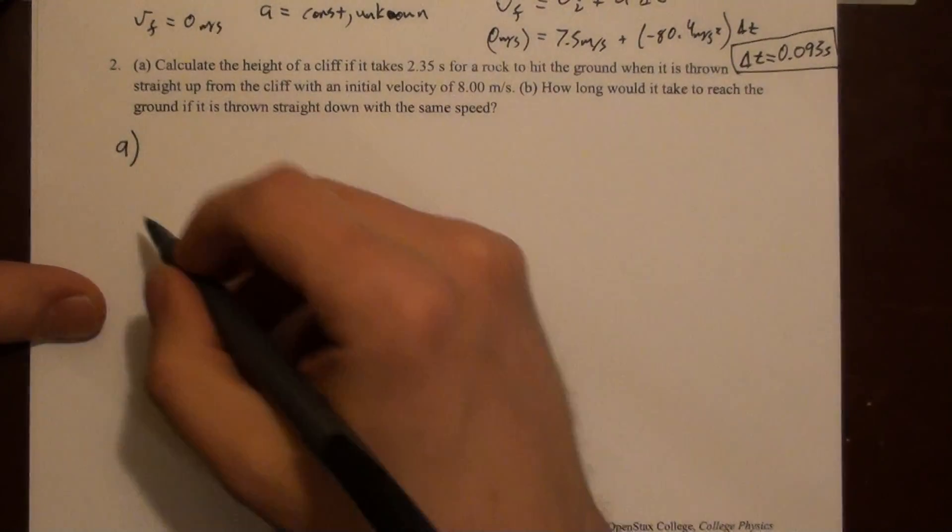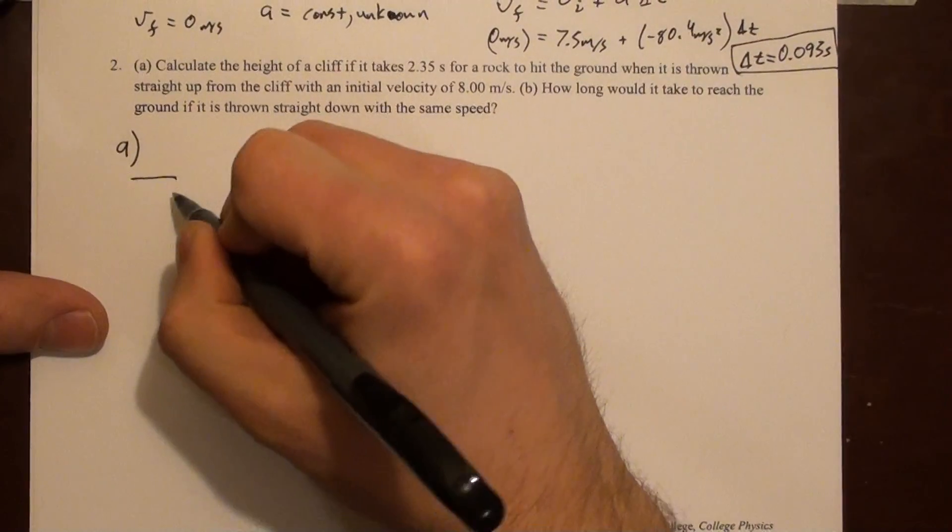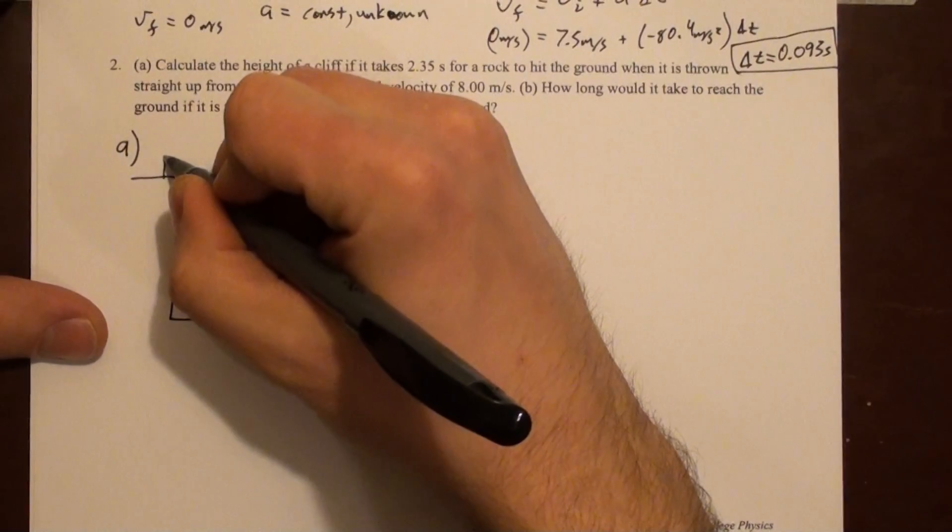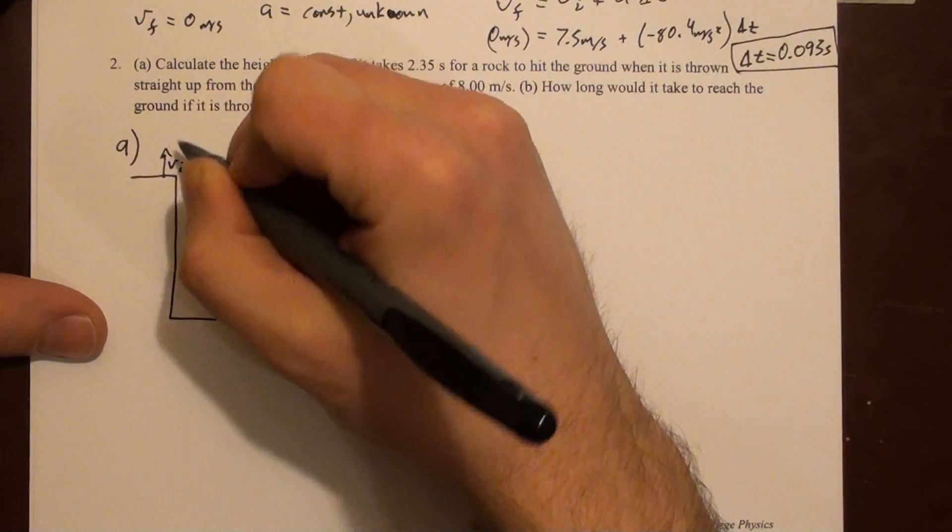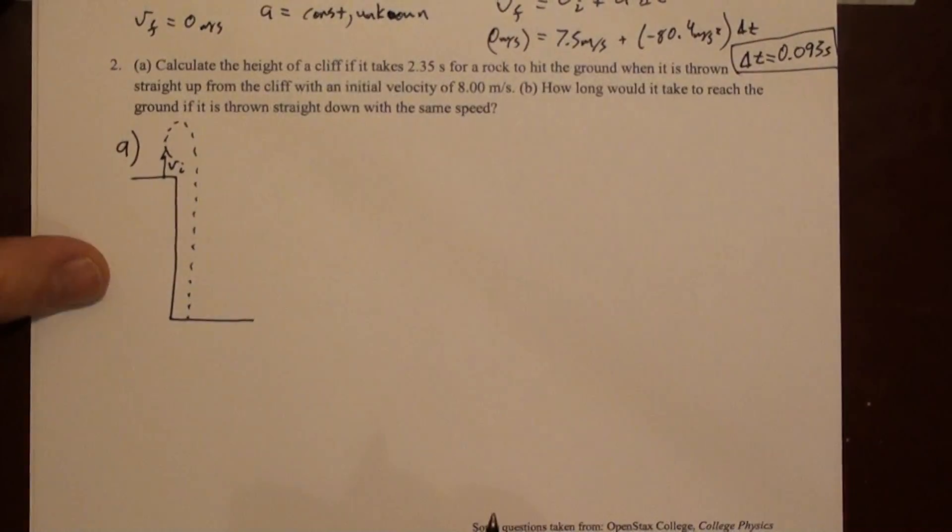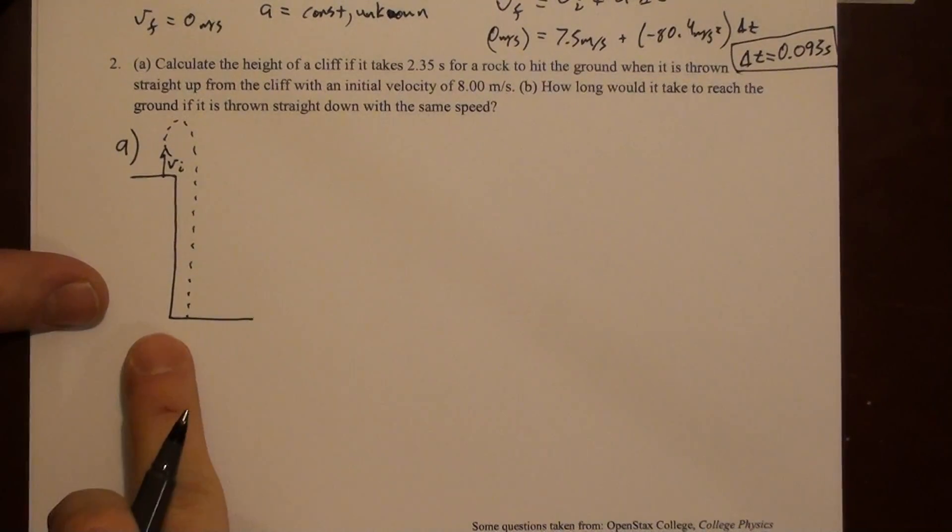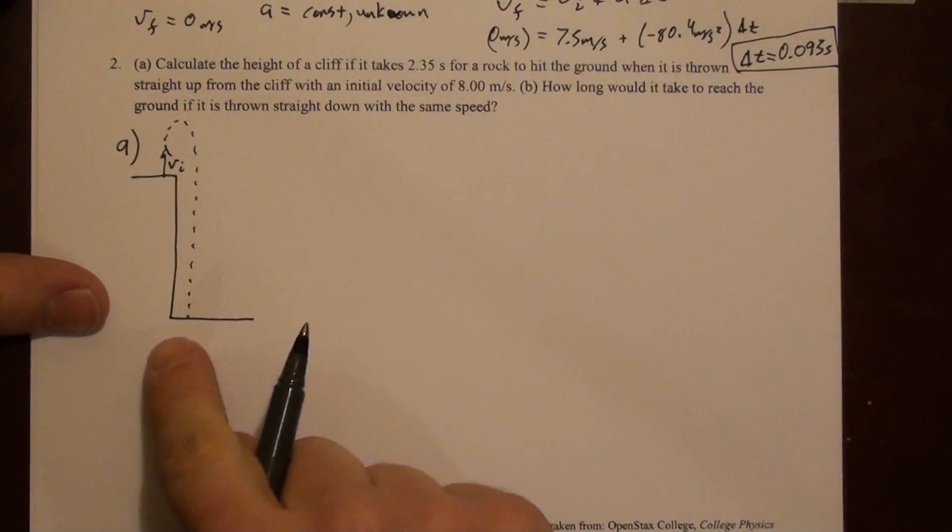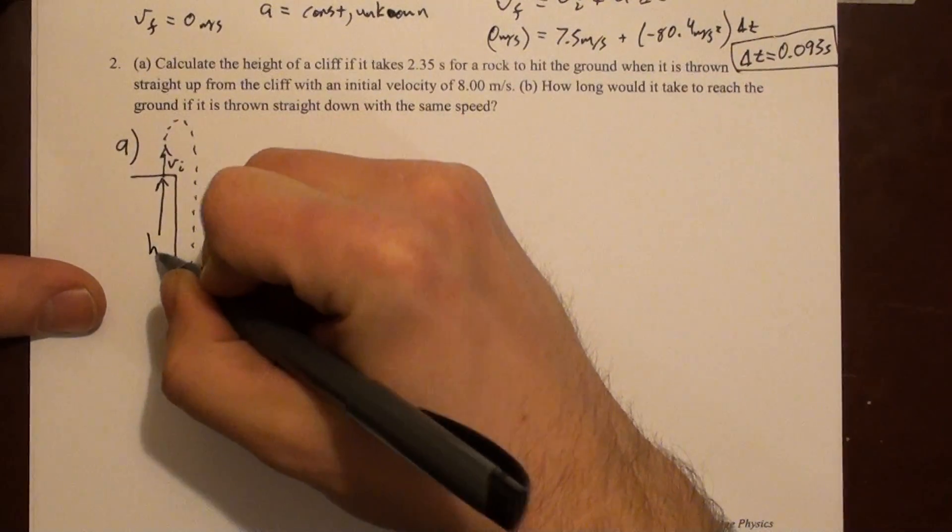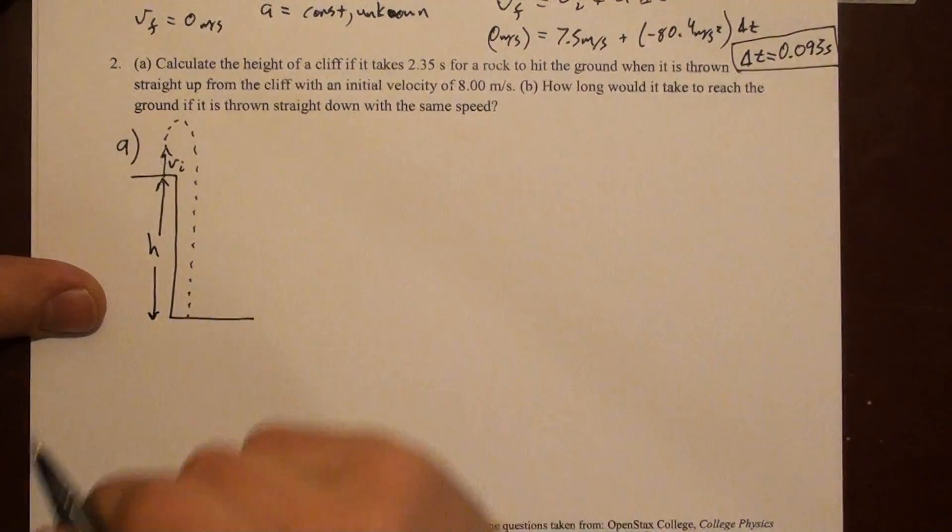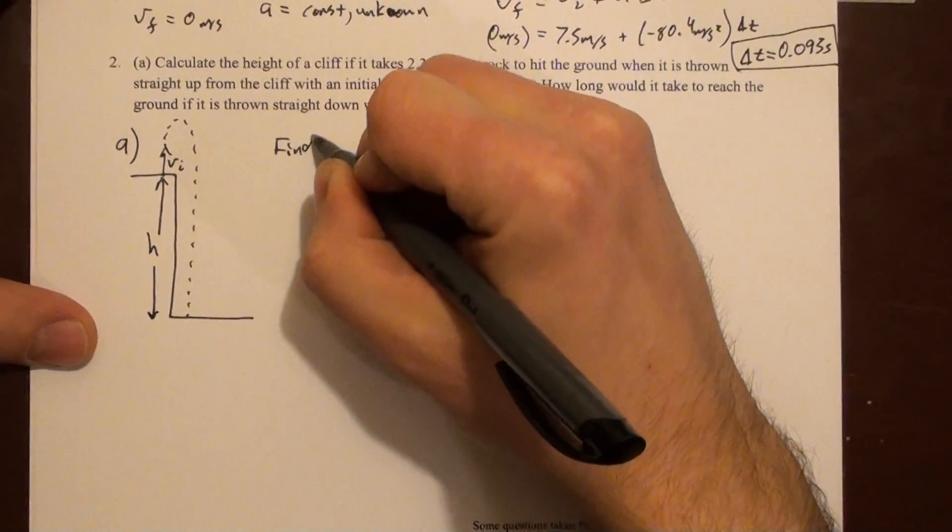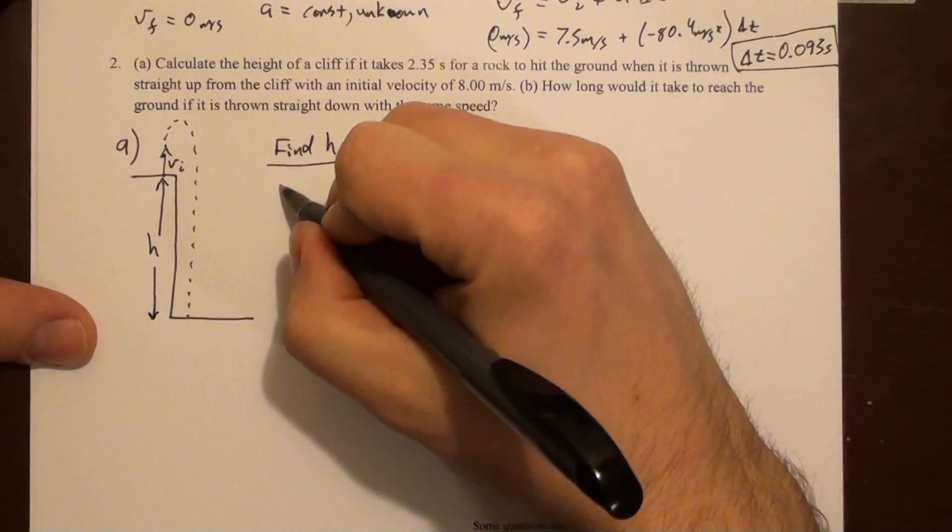We'll draw a picture initially. It's always a good idea to draw a picture. Here's our cliff. Here's our initial velocity. We're told that it's thrown straight up. But I can't draw the lines on top of each other, so I'll give it a little bit of width here. And we're looking for this height. Let's say find h.